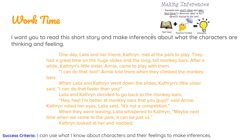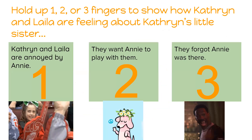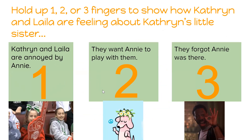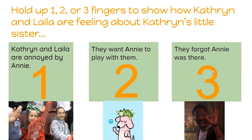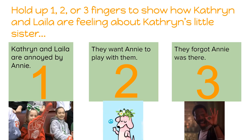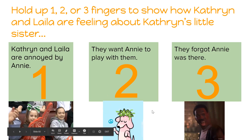Think for a moment. Use those context clues and your background knowledge to make an inference about how Catherine and Layla are feeling. We're not sharing yet, we're just thinking. How do you think they're feeling? Hold up one finger if you think Catherine and Layla are annoyed by Annie. Hold up two fingers if you think they want Annie to play with them. Hold up three fingers if they forgot Annie was there. Show me.